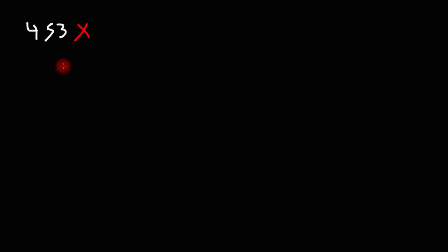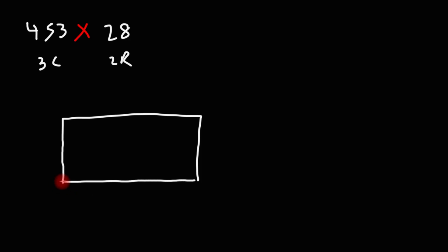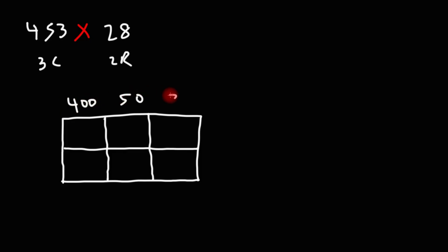Feel free to try this example: What's 453 times 28? Feel free to pause the video if you want to try that. Now, the first number is a three-digit number, so we're going to need three columns. The second number is a two-digit number, so we're going to need two rows. Whether you choose to have a box with three columns and two rows or three rows and two columns, the answer you will get will still be the same. 453 is 400 plus 50 plus 3, and 28 is 20 plus 8.